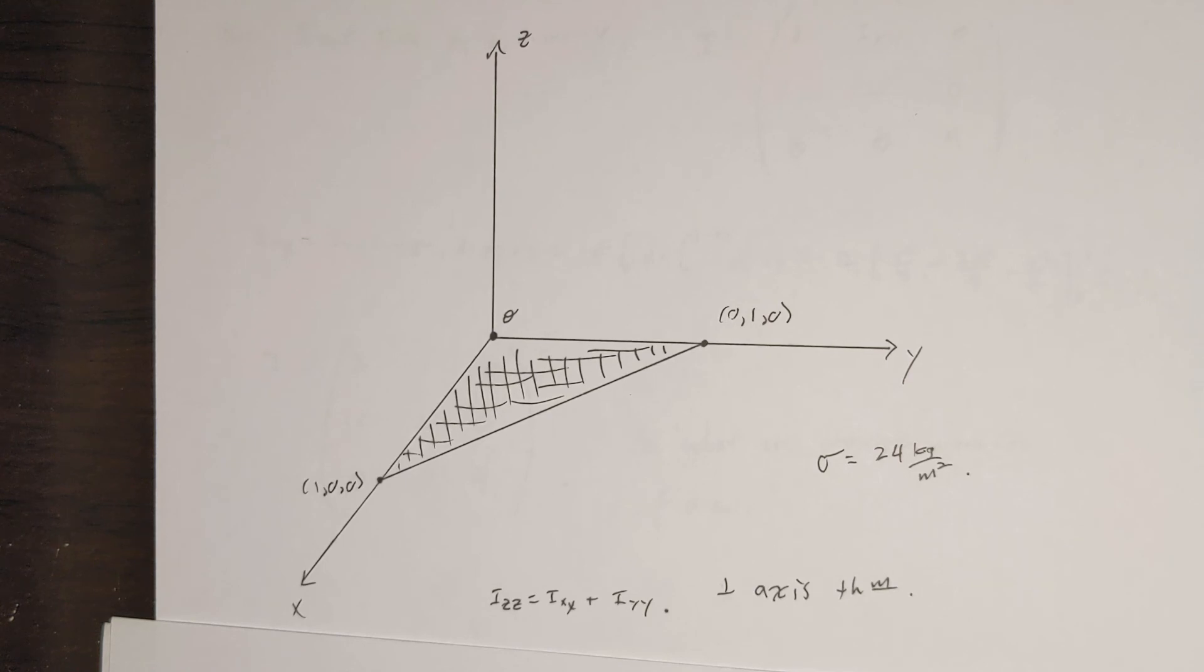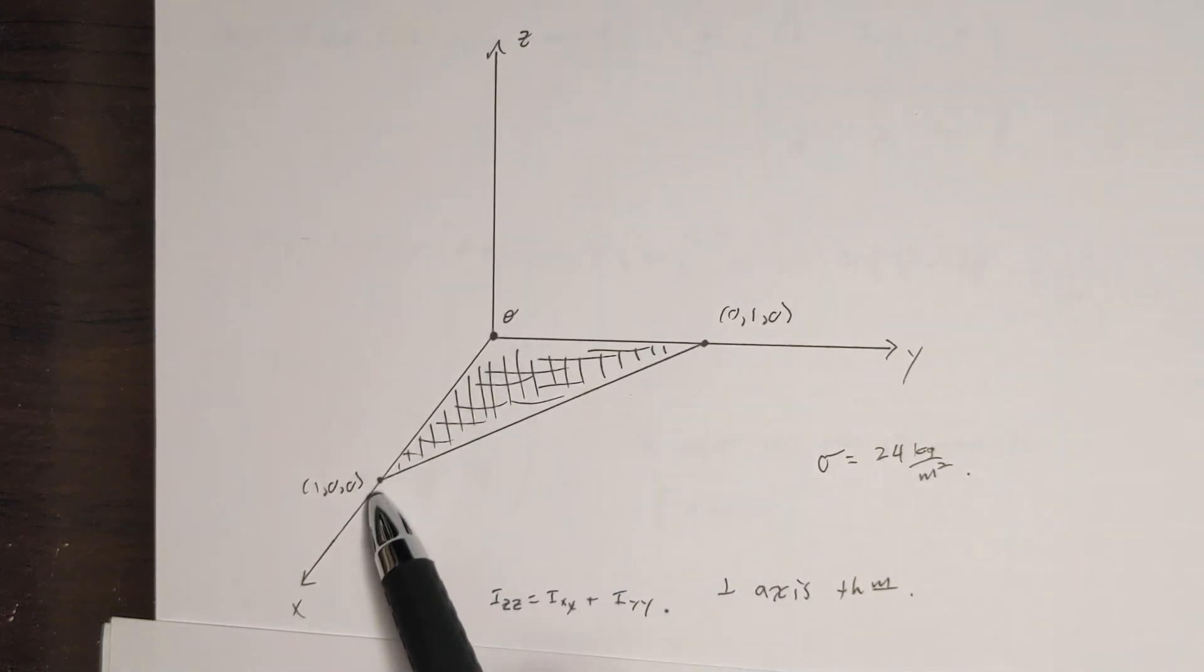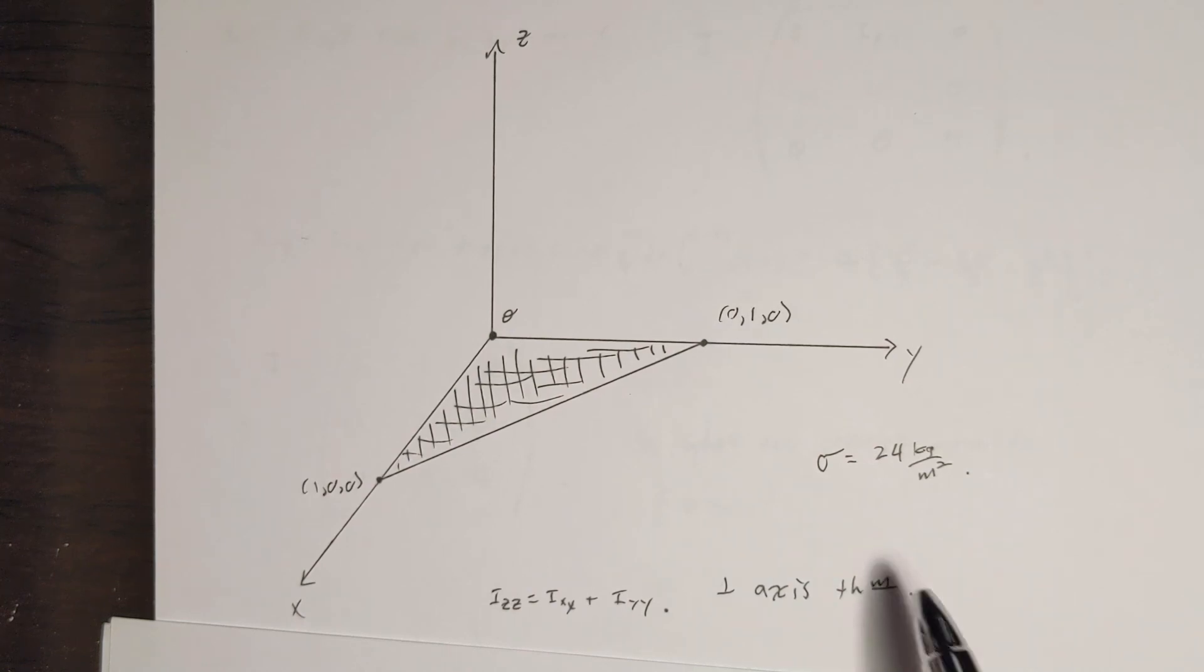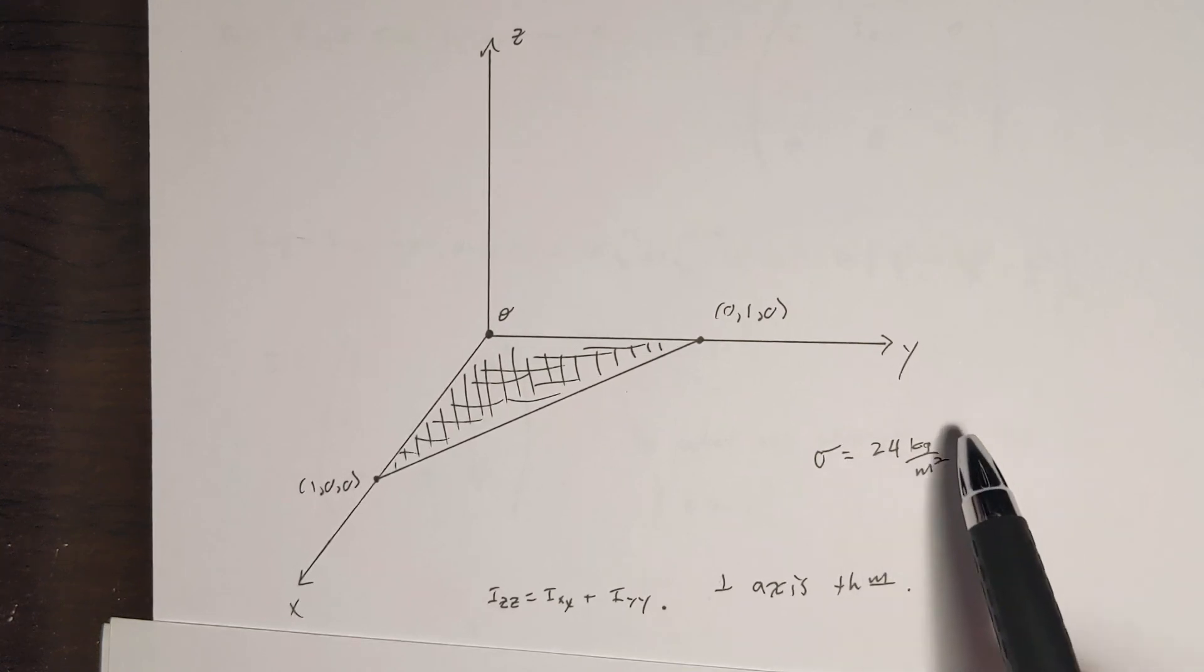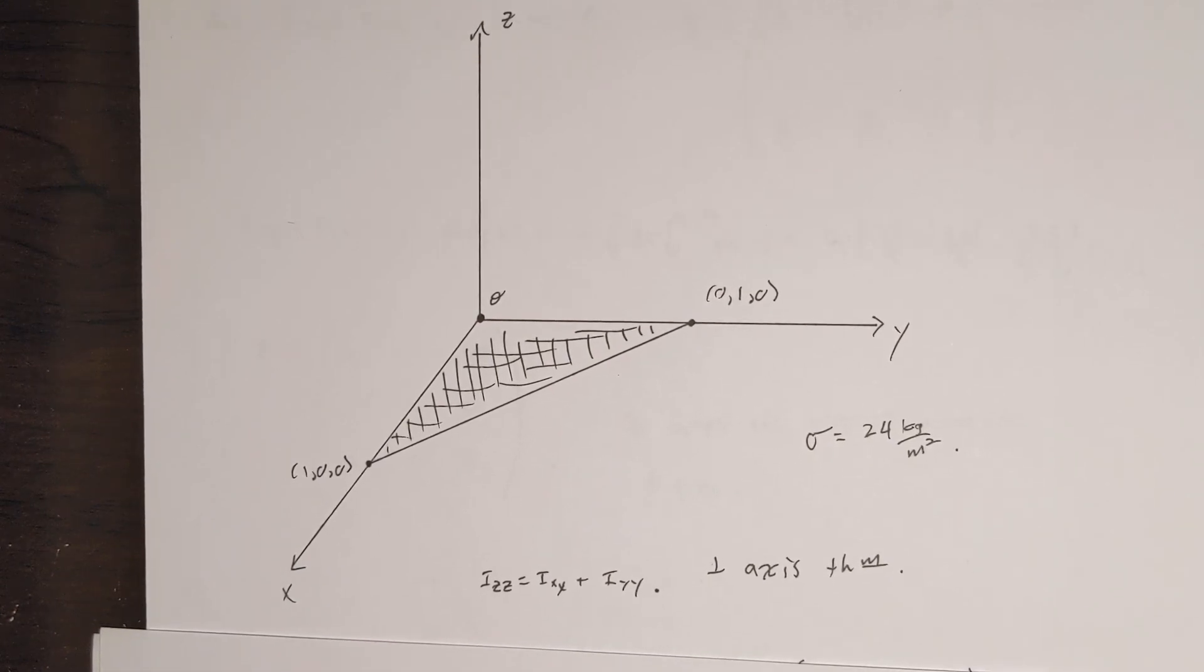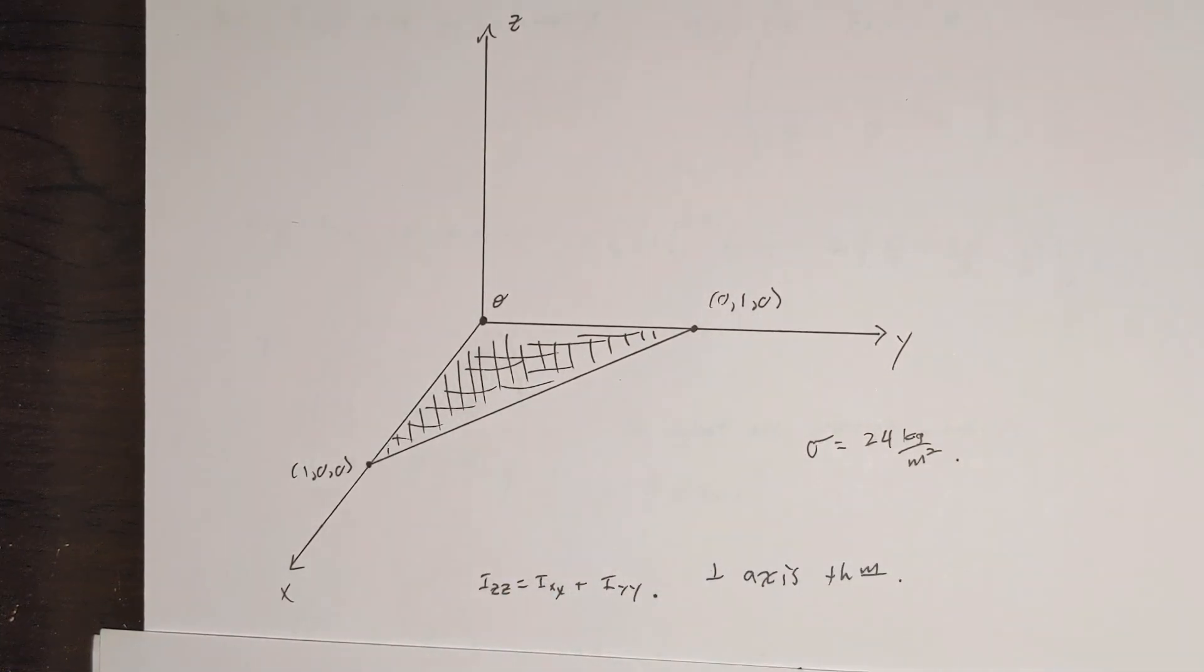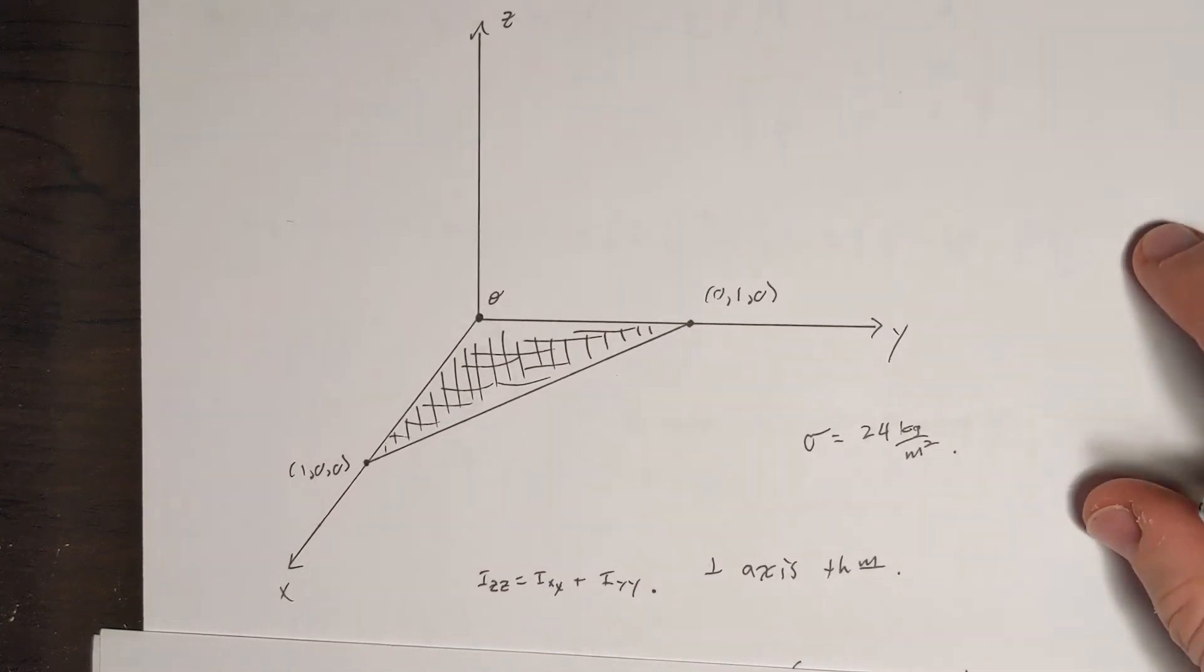So we want to calculate the moment of inertia of a 2D object here. The 2D object is an isosceles triangle with points at the origin, one point on the x-axis, and one point on the y-axis. We have a 2D object, so our mass density is going to be a surface density, equal to 24 kilograms per meter squared. And because it's 2D, we can use the perpendicular axis theorem. What that tells me is that the moment of inertia of the axis perpendicular to the object is equal to the sum of the two moment of inertias in the plane of the object.